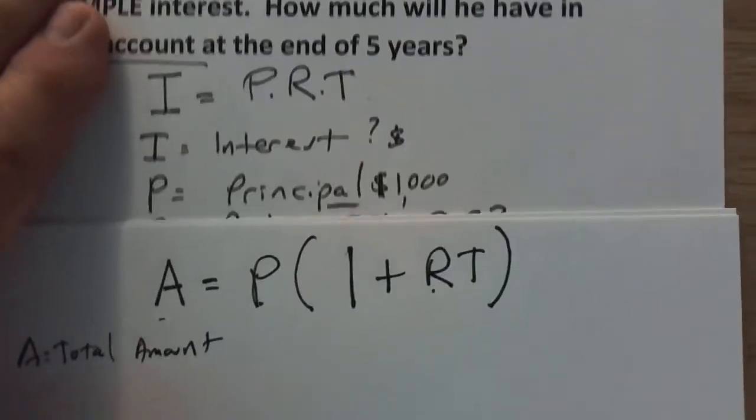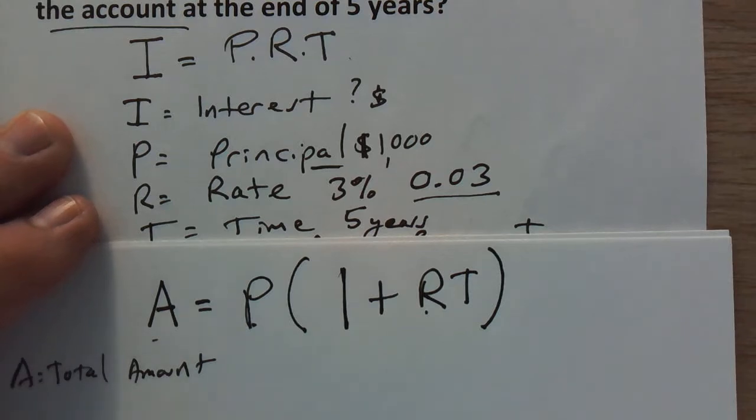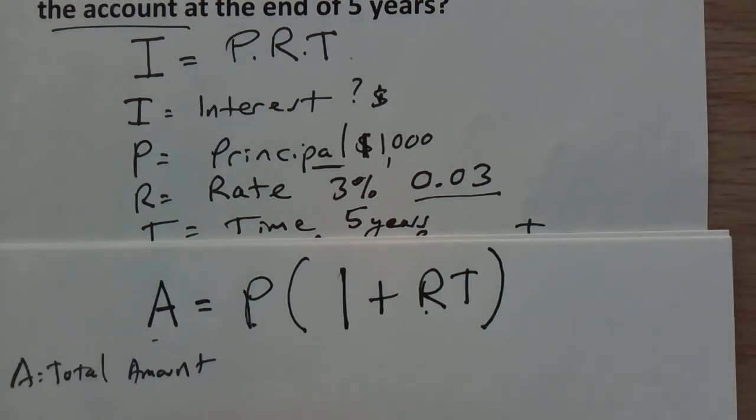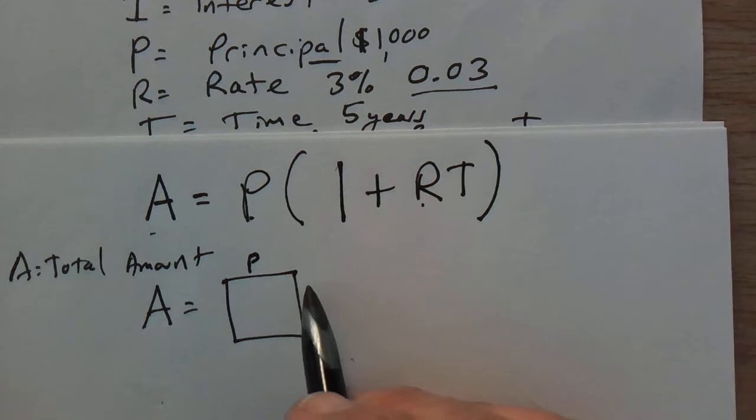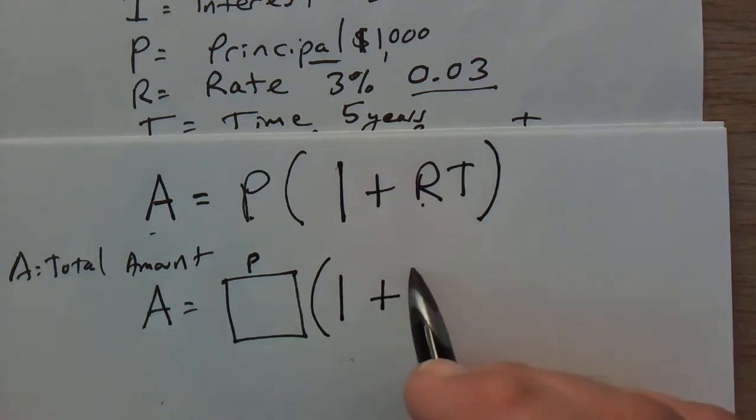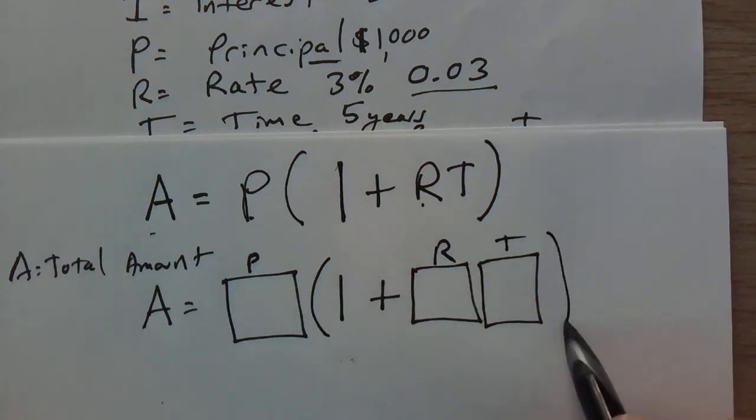We're going to fill it into this new formula. So A is equal to a box for P for principal times parentheses - when it's right up next to the parentheses that means multiply - one plus a box for our rate, a box for our time and we're going to close parentheses.